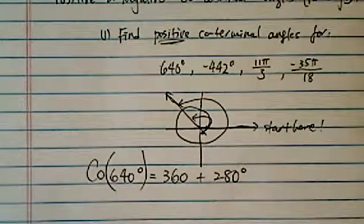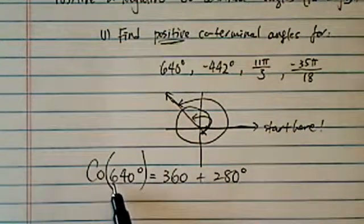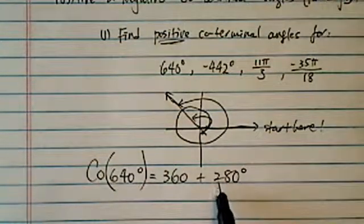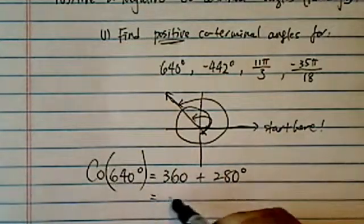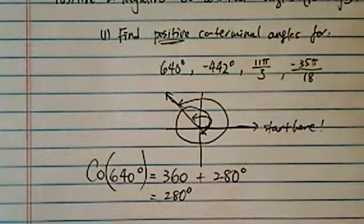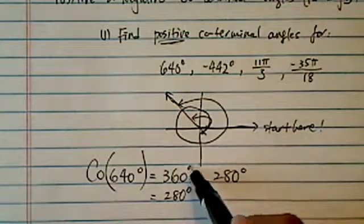So I like to write CO in front of it to say 640 is really not equal to 280, but coterminal of 640 does equal to 280 degrees. Basically we trim off the fat.